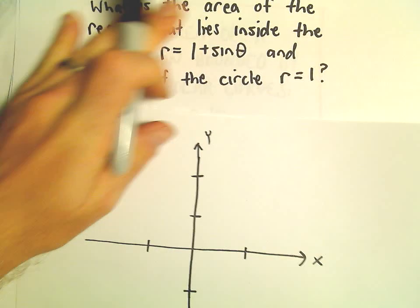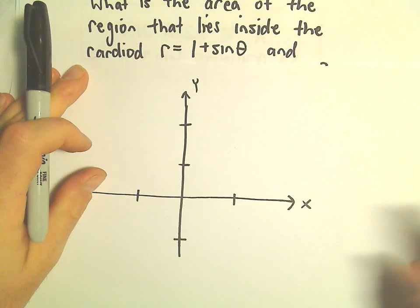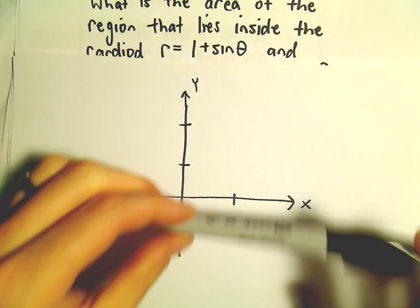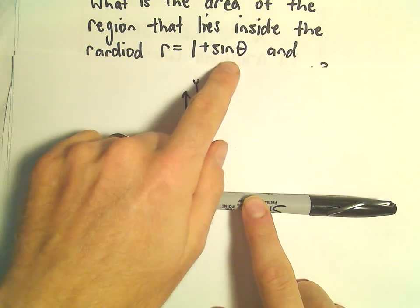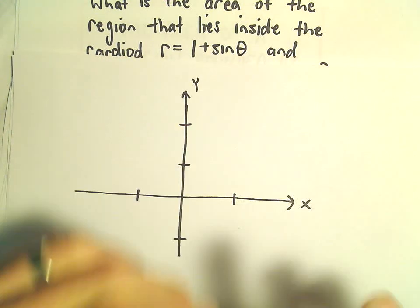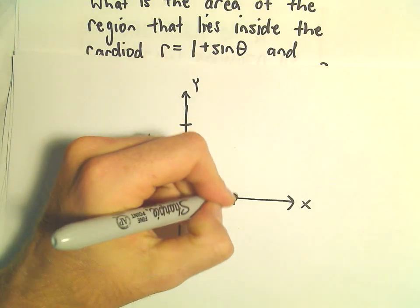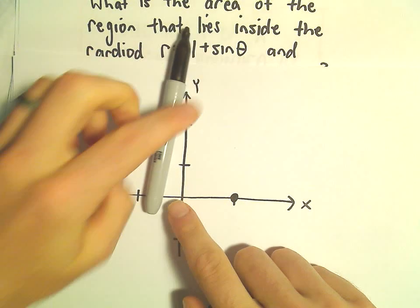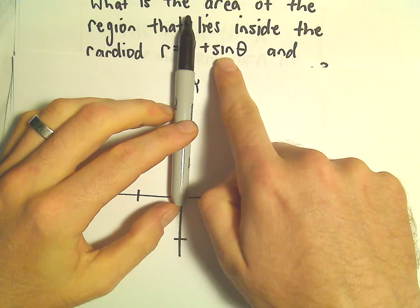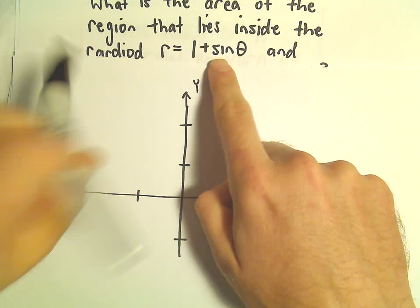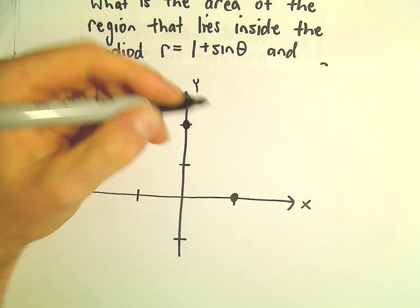So again, I'm going to try to do a little quick rough sketch. Let's do r equals 1 plus sine theta. When theta is 0, sine of 0 is 0, so the radius will be equal to 1. At the angle pi over 2, sine of pi over 2 equals 1, we'll get 1 plus 1, so our radius will be 2.